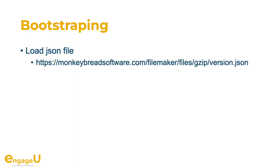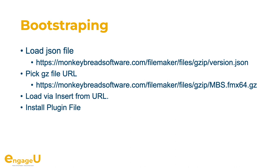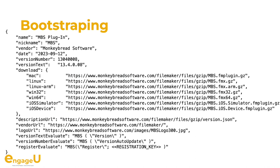If you distribute a solution using MBS Plugin you may be interested in bootstrapping it. For this you can load a JSON file from a URL, and once loaded you can find the URL for the file you need and then download it — for example, the Windows plugin — load it with Insert from URL in FileMaker, then use the install plugin file script step to install it. This can help you automate installation of the MBS Plugin. The JSON file currently has Mac, Linux, Windows, and even iOS versions so you can automatically download the current plugin version and install it. A new format with more keys for more vendors may be coming.